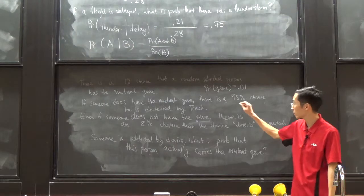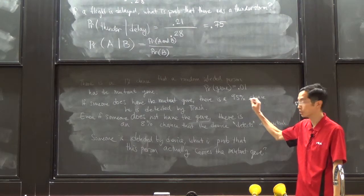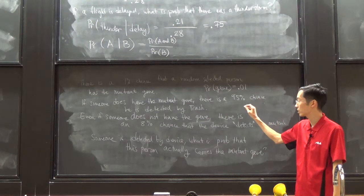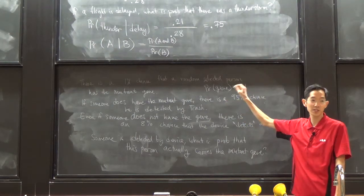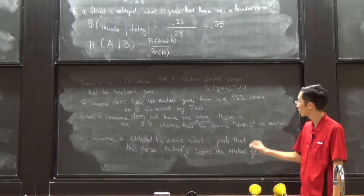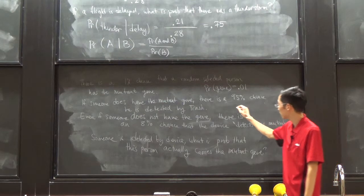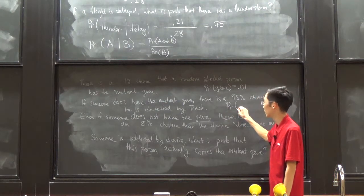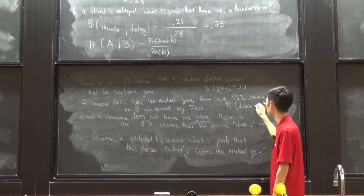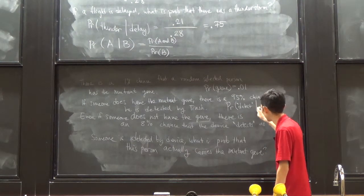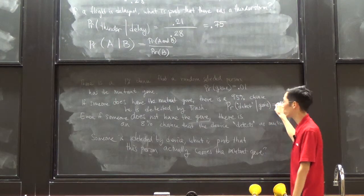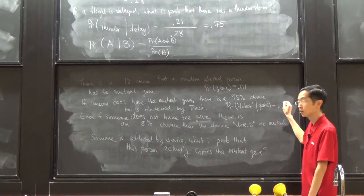The next thing says: if someone does have the mutant gene, there is a 95% chance that he is detected by Trask. Trask's device detects this thing. So I would say this is the probability of detection given someone has the gene, and this is equal to 0.95.